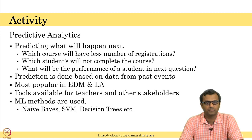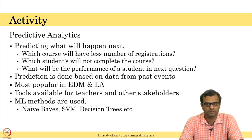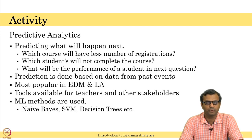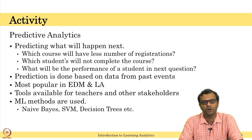How do you do that? Prediction is done based on data from past events. We collect past events — like how many students registered for a particular course over the last three years — and use that to predict what will happen in the next class.